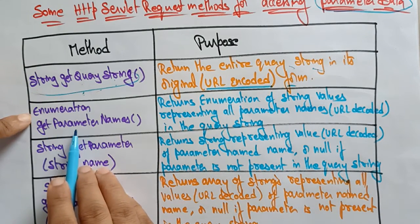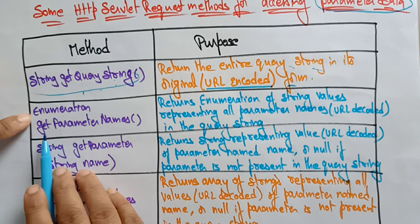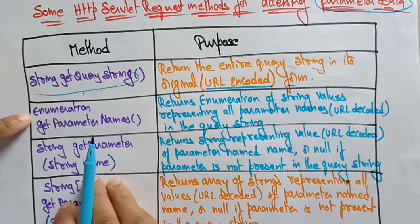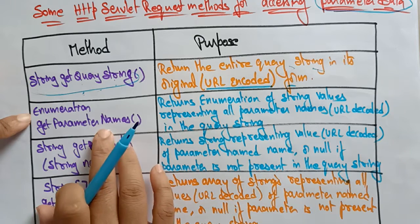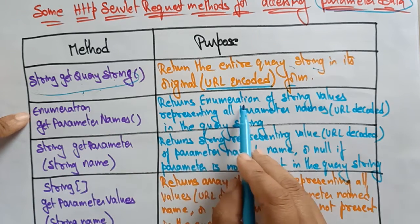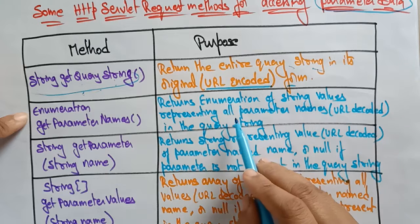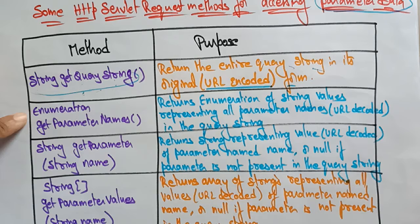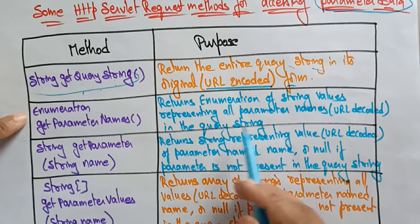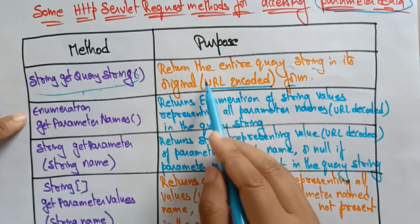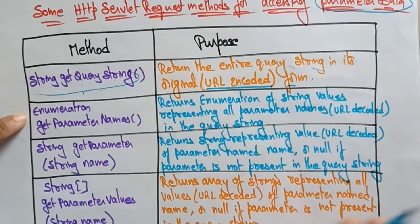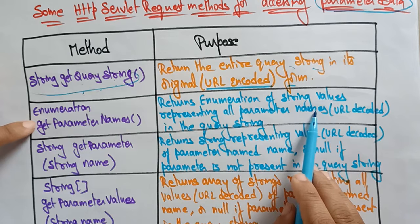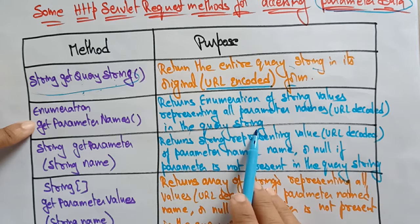The next method is Enumeration getParameterNames(). It returns an enumeration of string values representing all parameter names, and importantly it performs URL decoding on the query string. So unlike getQueryString(), which returns the original encoded form, getParameterNames() returns all parameter names in URL-decoded form.